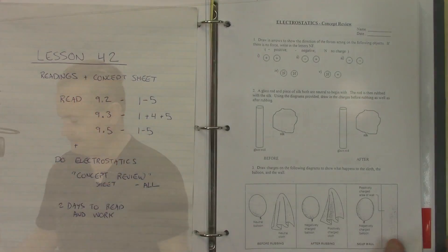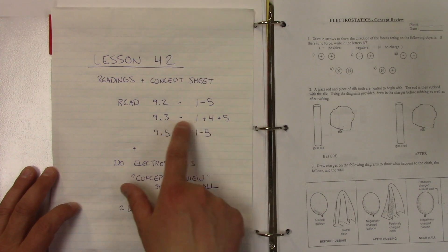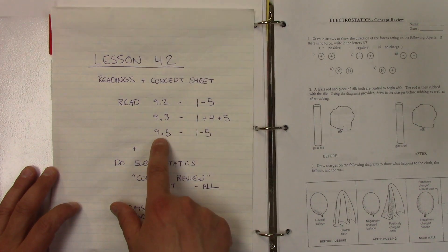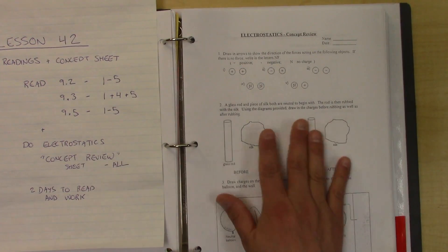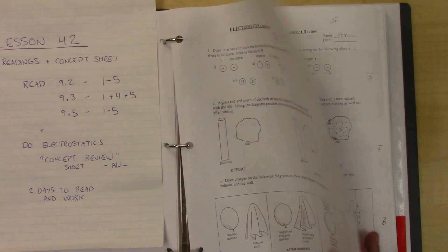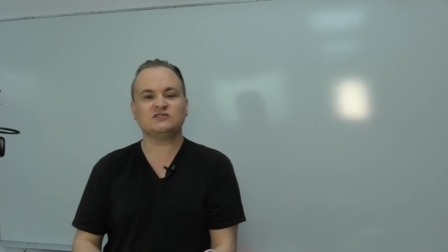So once again, I'm just going to quickly send you on your way, but what you need to do, let's look down here. For concept review, you're going to read 9-2, 1-5, 9-3, 1-4 and 5, and 9-5, 1-5, and then you're going to do the electrostatic concept review sheet front and back. Like I said, you have two days to work on it. Once you're done, submit everything on the classroom, and we'll see you soon.